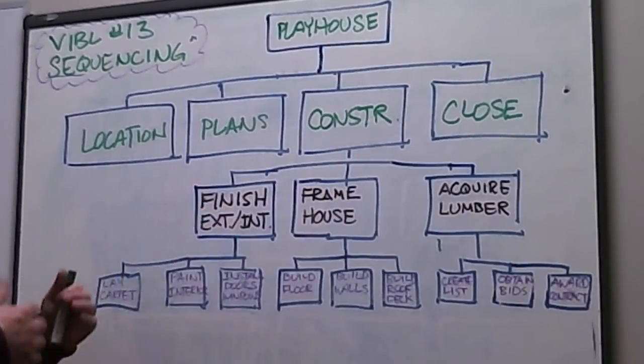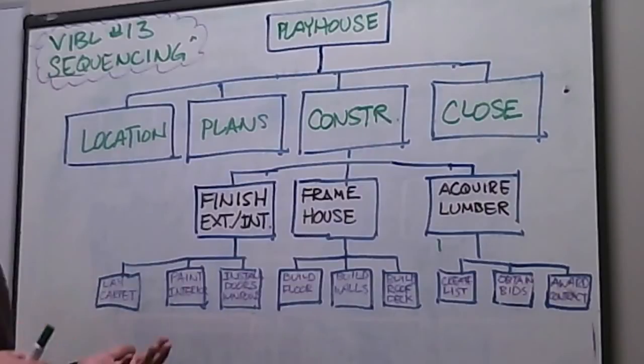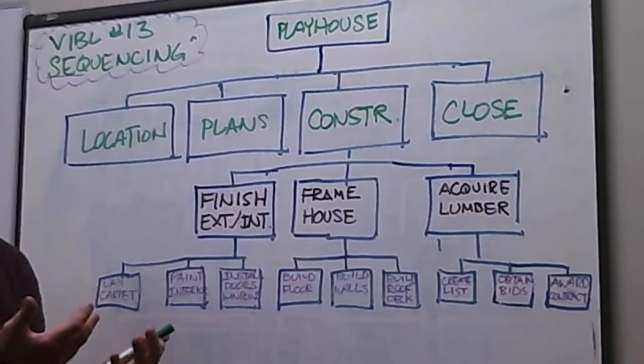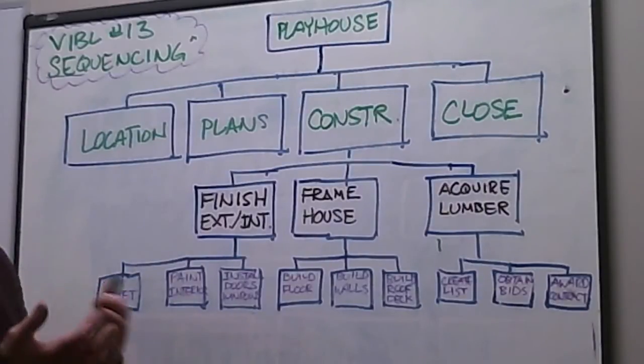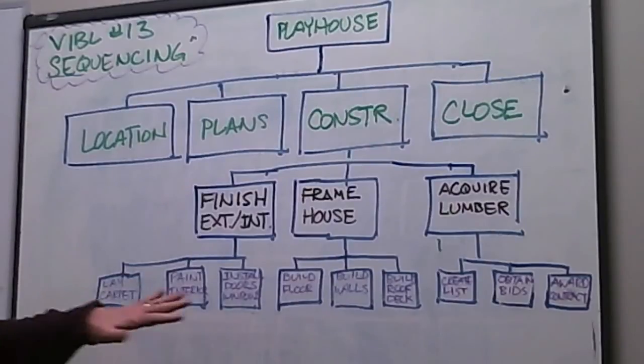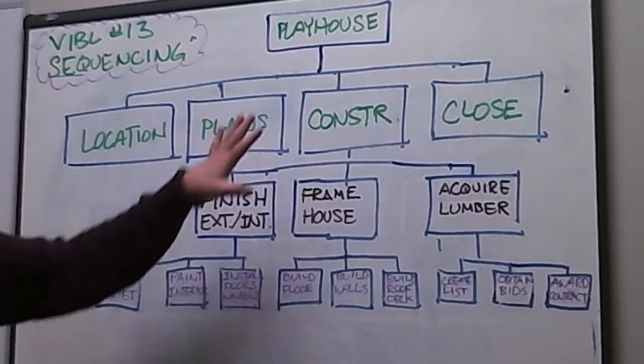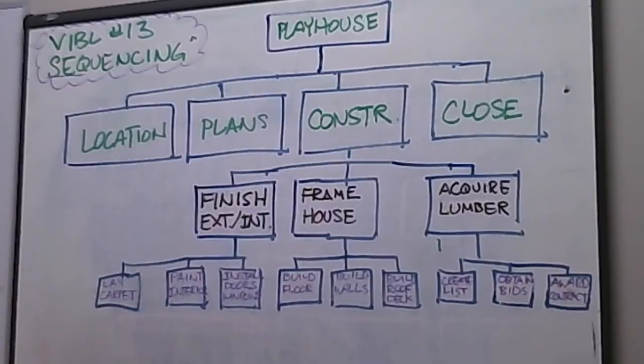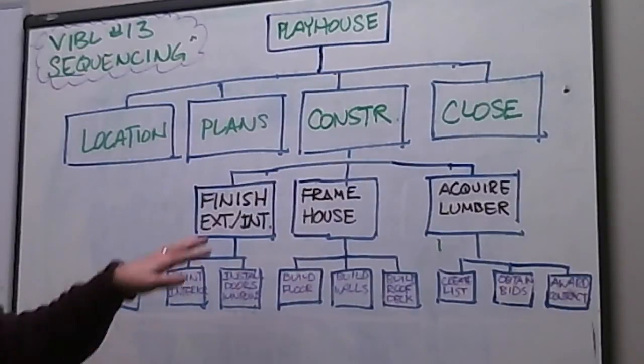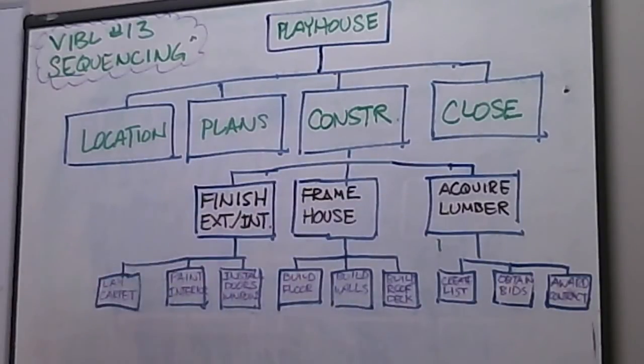When we finish, finish exterior and interior is in the line of laying carpet, painting walls, installing doors and windows. That essentially is what I'm doing in breaking down the construction summary task of this particular project: establishing the work packages and then the activities that support those work packages.